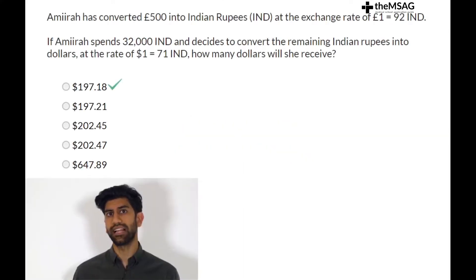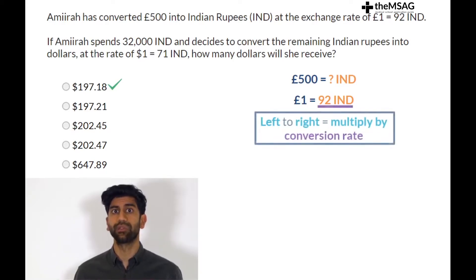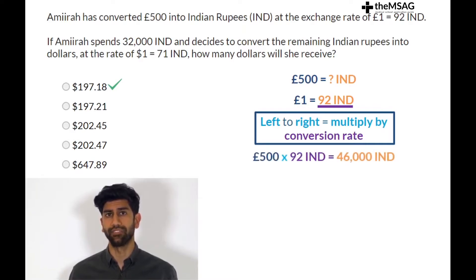Question 1. The answer was A. This is a classic currency conversion question made a little difficult by the need to make two conversions. First we need to convert 500 pounds into rupees knowing that 1 pound equals 92 rupees. We're going from pounds to rupees from left to right so we multiply by the conversion rate. 500 times 92 equals 46,000. She gets 46,000 rupees.